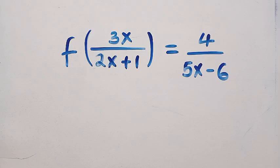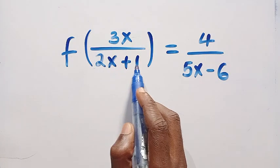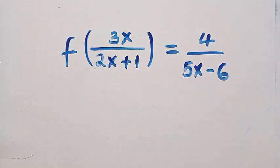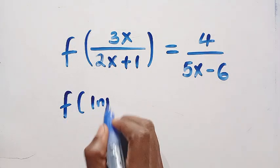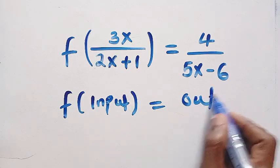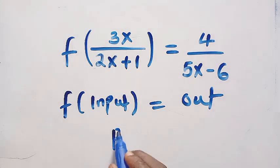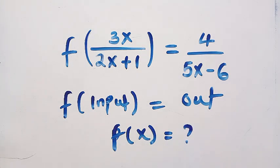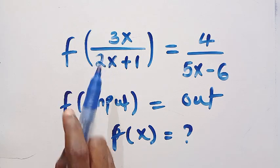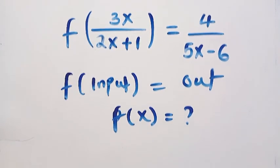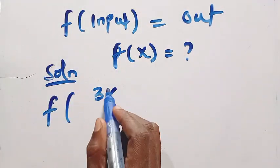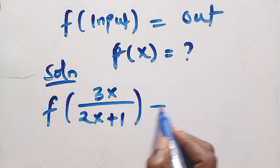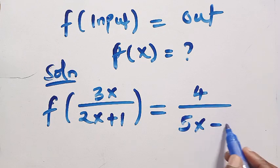We have a nice functional equation: f of 3x over 2x plus 1 equals 4 divided by 5x minus 6. We want to find f of x. We will apply a substitution approach, but first let's define the domain of this function: f of 3x divided by 2x plus 1 equals 4 divided by 5x minus 6.